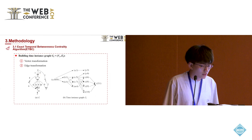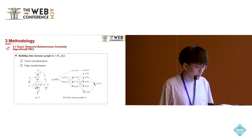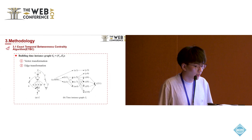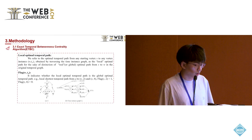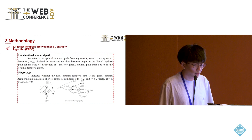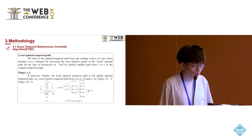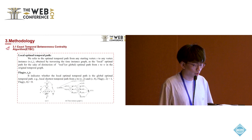Part 3. For ETBC, we convert the original temporal graph into a time instance graph. The vertices and edges will be transformed according to a specific rule: whether a successor temporal edge can be reached by the predecessor temporal edge. We also define the local optimal temporal path and a flag. The local optimal temporal path refers to the optimal temporal path from any starting vertex to any vertex instance obtained by traversing the time instance graph. The flag indicates whether the local optimal temporal path is also the global optimal temporal path.